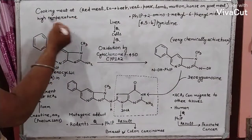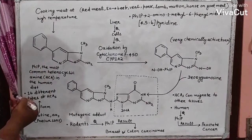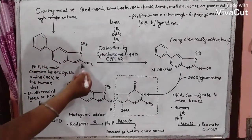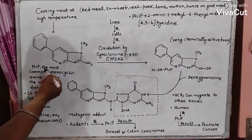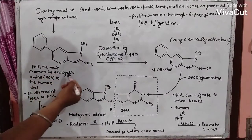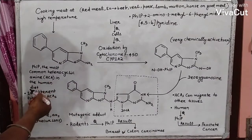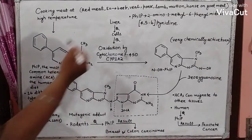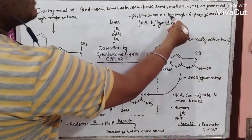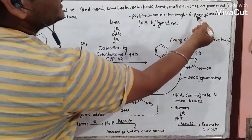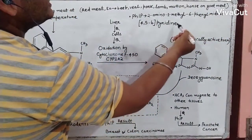Cooking meat at high temperature produces PHIP. This is the structure of PHIP. It is the most common heterocyclic amine, or HCA, in the human diet. PHIP stands for 2-amino-1-methyl-6-phenyl-imidazo-pyridine.